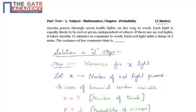If there are no red lights, it takes Ayesha 15 minutes to commute to work. Each red light adds a delay of two minutes. We are supposed to find the variance of her commute time. We will solve this in two steps: first, we'll find the variance for the number of lights.